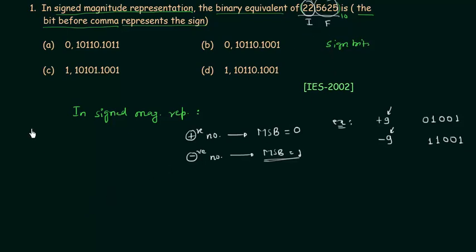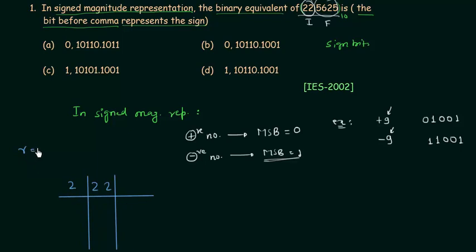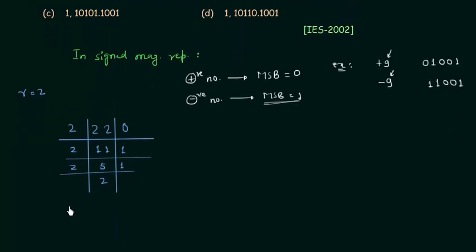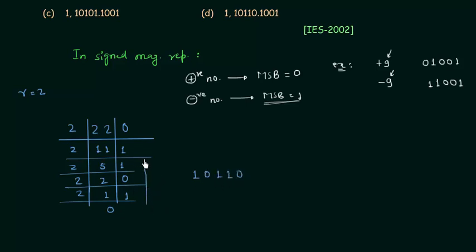First we will convert the integer part. We divide 22 by 2 because the base in binary is 2. 22 divided by 2 gives quotient 11, remainder 0. Then 11 divided by 2 gives quotient 5, remainder 1. Then we get quotient 2, remainder 1. Then 2 divided by 2 gives quotient 1, remainder 0, and finally 1. Reading remainders from bottom to top, the integer part is 10110.